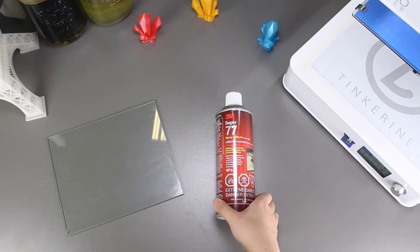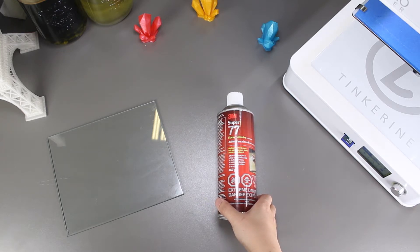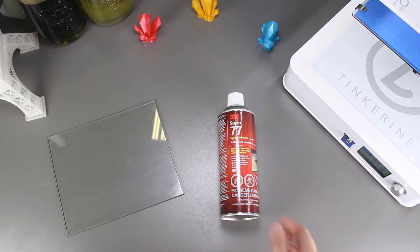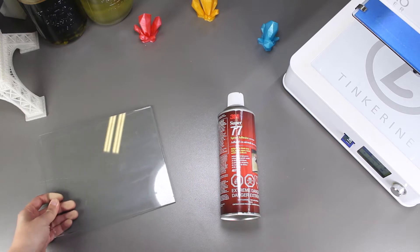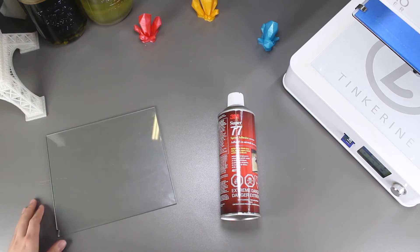Welcome to another episode of Tinkering and Experiments. Today we are going to try using the 3M Super 77 multi-adhesive spray as bed adhesive. I was just walking around the warehouse and then I noticed this bottle there and wanted to test it out.